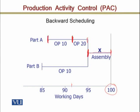Similarly for Part B, it must also be complete by the 95th day so that X assembly can begin. Part B's operation 10 requires 10 days, so Part B should go into production on the 85th day. In this problem, we have not included other parts or additional load, which means this is infinite loading — we solved this problem on the basis of infinite loading.